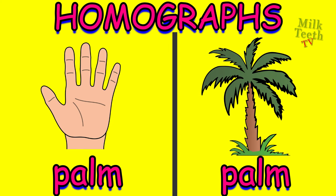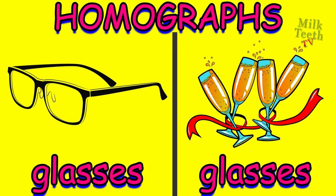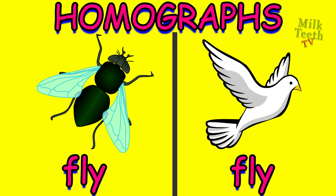Glasses — used to look at things. And glasses — used to take a drink. Fly — an insect. And fly — which means that the birds fly in the sky.